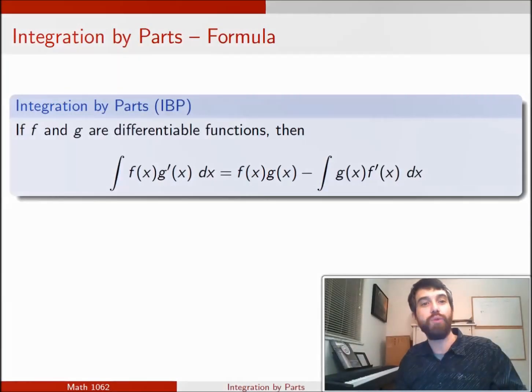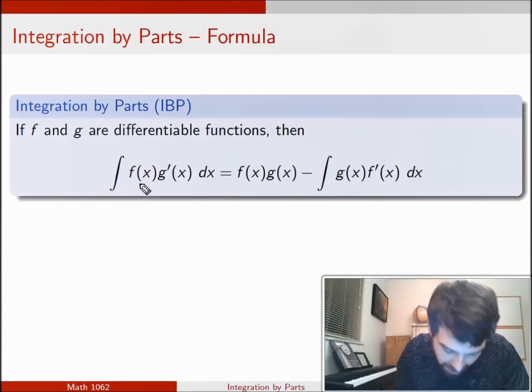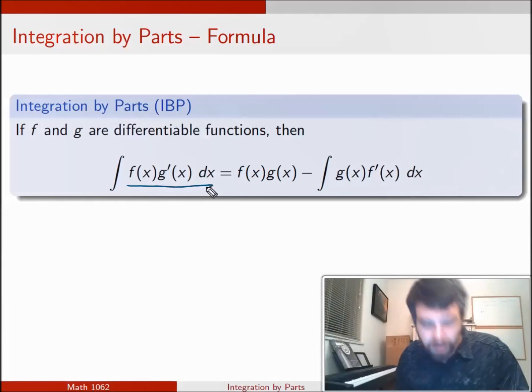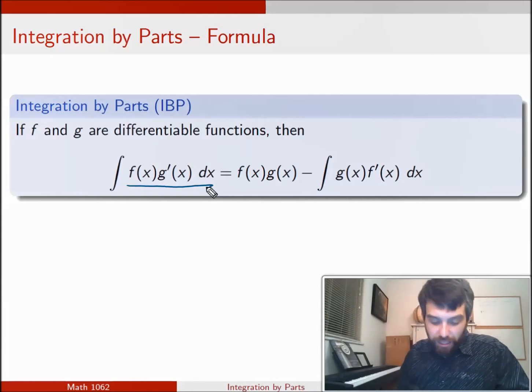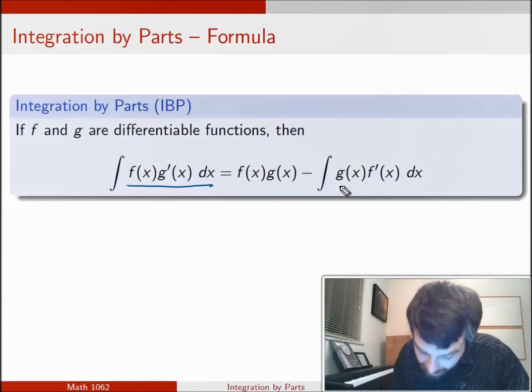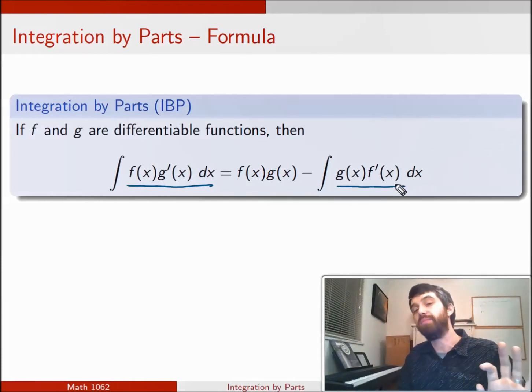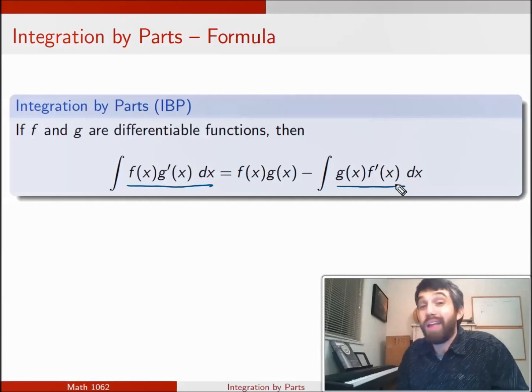It applies when you look at the integral that you have, in this case the left-hand side, and it can be written as the product of two things: one a function and the other its derivative. Then what the rule allows you to do is relate this integral to a different one, to the integral of g(x) times f'(x). Why is this even useful? The hope would be that the left-hand side is an integral that's complicated, one that we don't know how to do, but that the right-hand side, after applying this formula, is one that we do know how to do.